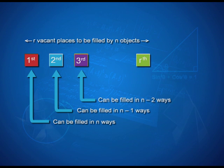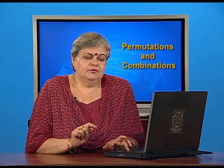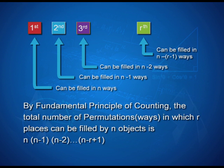Similarly, the third position can be filled in n−2 ways because two objects have already been used. For the rth place, r−1 places have already been filled, meaning r−1 out of n objects have been used. So the number of choices left for the rth place is n−(r−1), which is the same as n−r+1. The r places can thus be filled in n, n−1, n−2, … , n−r+1 ways respectively.